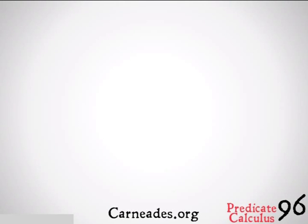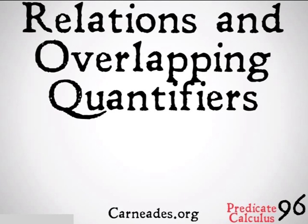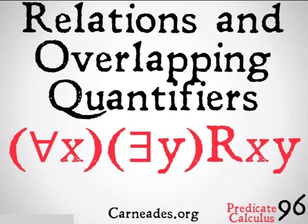Welcome back to Carnades.org. We are back here with the last 10 days of the 100 days of logic, looking at the rules and symbols of predicate calculus. Today we're going to be looking into relations and overlapping quantifiers. These are things that are going to make our basics of predicate calculus get a little bit more complicated and add a lot of different things that we can represent with logic. Don't worry if you don't understand that now — we're going to explain it throughout the video.